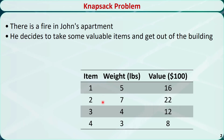There are four valuable items. Each item is associated with a weight and a value. For example, item 1 weighs 5 pounds and is worth $1,600, and so on.